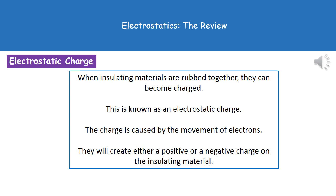Welcome to our review on electrostatics. The first thing we need to understand is how we actually generate this electrostatic charge. To generate that charge we need to have two insulating materials which are going to be rubbed together. When that happens, those insulating materials become charged either with a positive or a negative charge, and all of that is caused by the movement of electrons from one insulating material to the other.